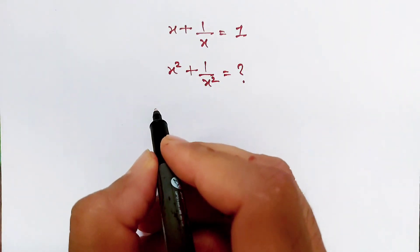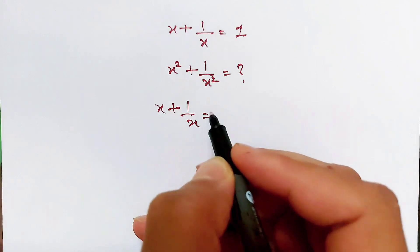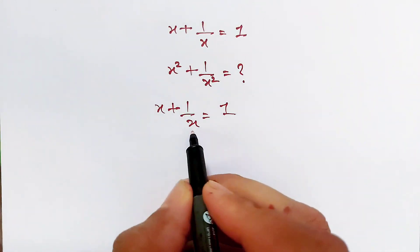First of all, we will take the square of both sides of this equation.